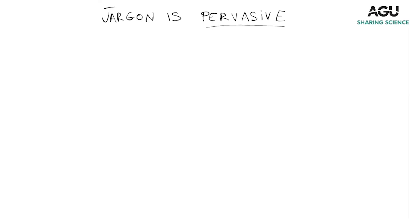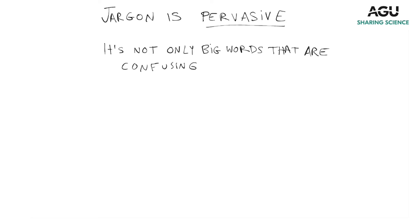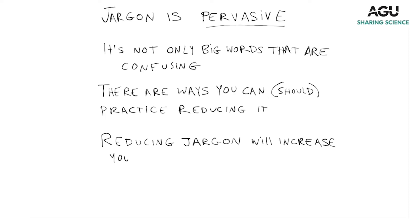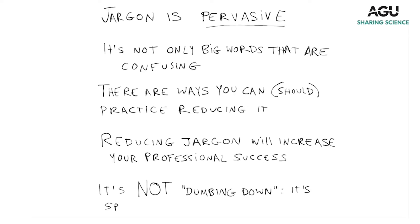To recap: jargon is pervasive, it's everywhere, it's not just in the sciences — it's even in the definition of jargon if you look it up. It's not only big words that are confusing; there are words with multiple meanings, acronyms, and really obscure words. There are ways you can — and frankly should — practice reducing it. Check out Upgoer 5, phone a friend, whatever it might be. And reducing jargon will increase your professional success. It's not just for the good of science communication — it's also good for you professionally. It is not dumbing it down; it is speaking in a shared language that everyone understands and connects with.